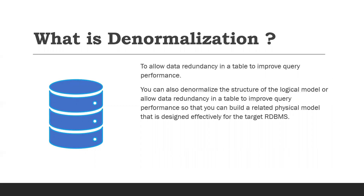What is denormalization? Denormalization is a strategy used on a previously normalized database to increase performance. The idea is to add redundant data where it will help the most. We can use extra attributes in existing tables, add new tables, or even create instances of existing tables. The usual goal is to decrease the running time of select queries by making data more accessible or by generating summarized reports in separate tables. We can also denormalize the structure of the logical model to allow data redundancy in a table, in order to build a related physical model designed effectively for the target relational database management system.